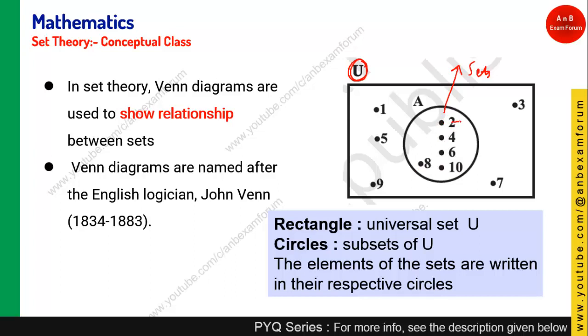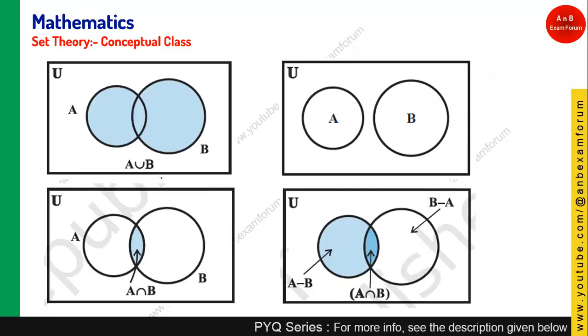Obviously there will be certain elements in the universal set which are not part of the set, so those kind of relations you can put in this Venn diagram. And students, you should know that these Venn diagrams are named after English logician whose name was John Venn, who basically made this relationship diagram which is also known as Venn diagram.